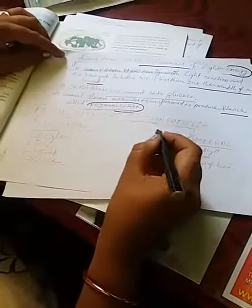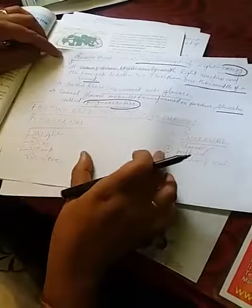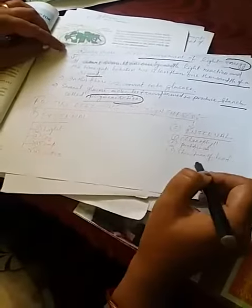And this occurs in the dark phase. And for this photosynthesis two types of factors are required, that is external factor and internal factor.